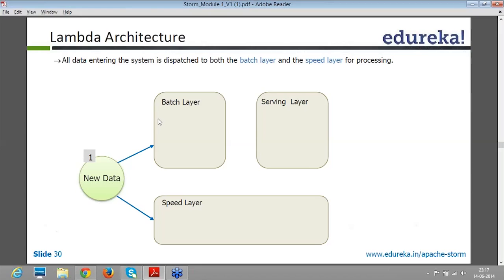Both the layers receive the data redundantly for processing because both are meant for different things. One is periodically processing the data in the batch layer, and in real time one system is processing the data. So the combination of both of these can be considered as Lambda architecture.